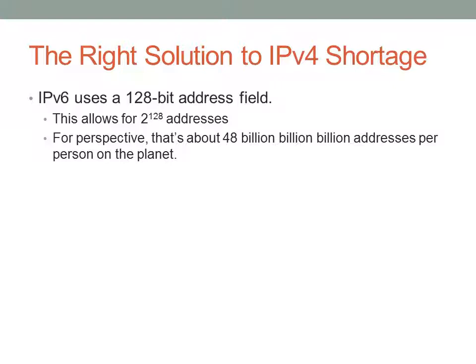That's 48 billion billion billion addresses per person on the planet. So take that times 7 billion and you've got an idea of what's going on. It's a huge address space. We haven't even had to allocate that much of it.